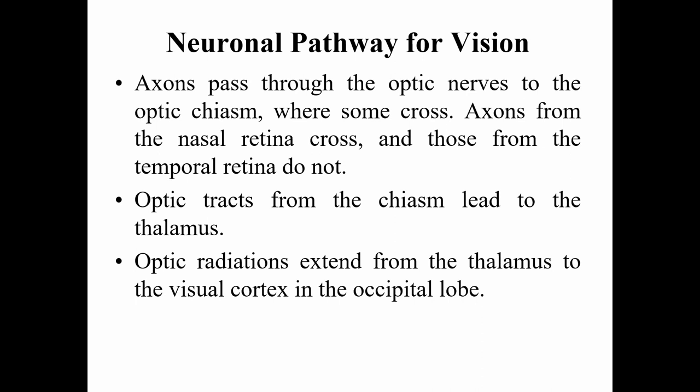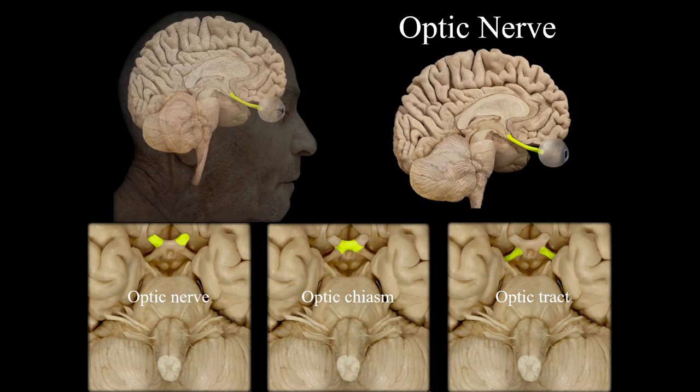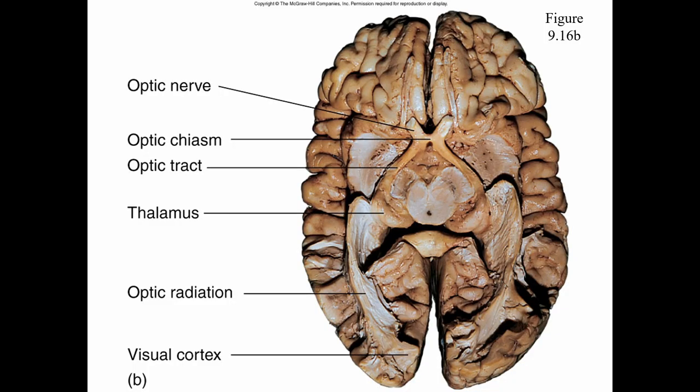For the neuronal pathway of vision, axons pass through the optic nerves to the optic chiasm, where axons from the nasal retina cross and those from the temporal retina do not. Optic tracts lead from the chiasm to the thalamus, and optic radiations extend from the thalamus to the visual cortex in the occipital lobe.